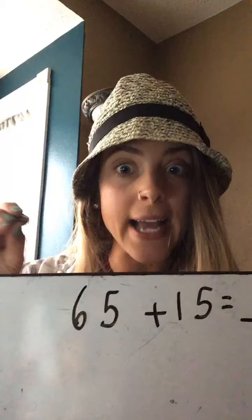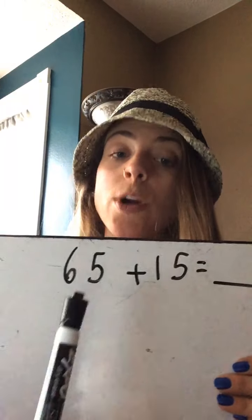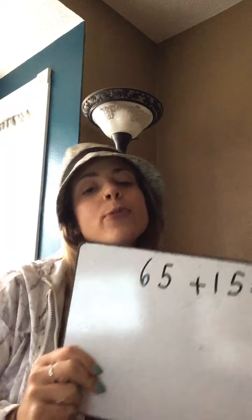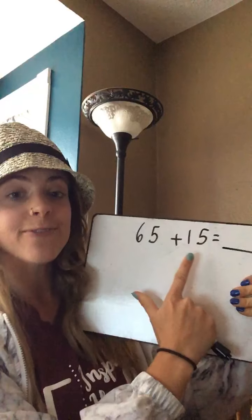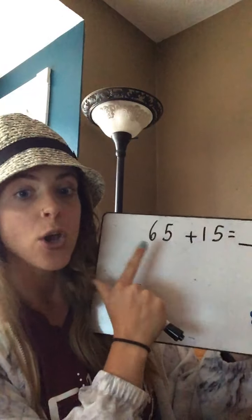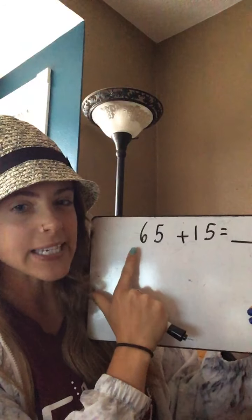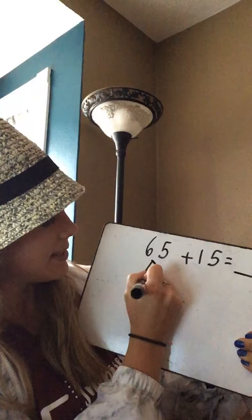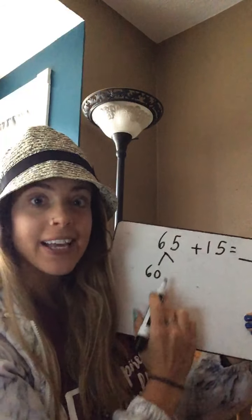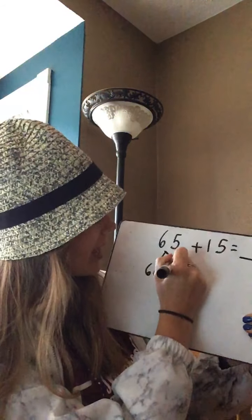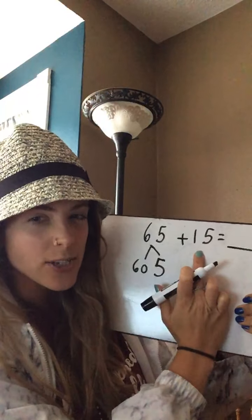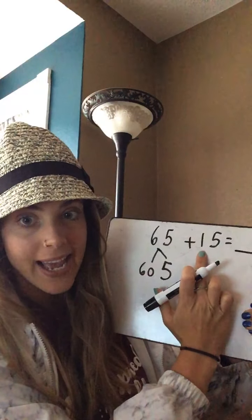So yesterday we broke down big numbers into tens and ones. We're gonna do that today, and I'm gonna show you how we will take that to help us solve. So starting off, we have 65 plus 15. If we remember from yesterday, 65 has six tens, which is the same as 60, so we can break 65 down into 60 and five, because 60 plus five is 65. And we can break 15 down into 10 and five.